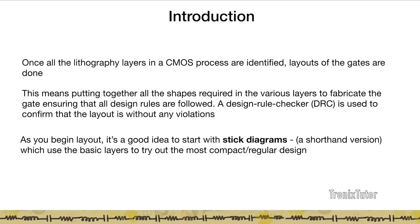In this video let's talk about stick diagrams and layouts. As seen in the process flow video, a CMOS process has many lithography layers, and layouts require you to understand the design rules between these various layers. Layout essentially means putting together all the shapes required to fabricate a gate or transistor. A design rule checker, or DRC, is normally used to confirm if the layout is valid and has no violations.